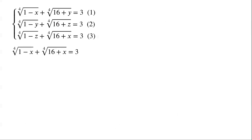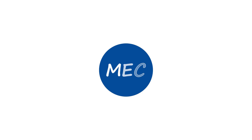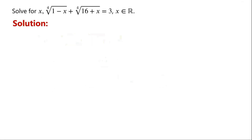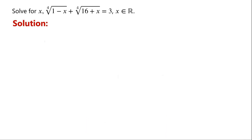The fourth root of 1 minus x, plus the fourth root of 16 plus x, equals 3. We have made a video on solving this radical equation — please watch it. A usual way to solve a radical equation like this is to remove the radicals by raising the equation to the power of the index. However, for the given equation, if we raise it to the power of 4, the resulting equation becomes more complicated. So we will use a different method.